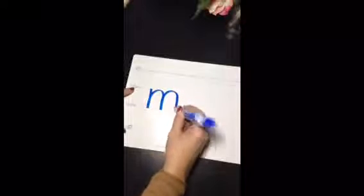M is a consonant. It makes the sound M. M, man, M. M is a plain line letter. We're going to start on the plain line and go down to the grass line, trace back up to the plain line and make a hump, then trace right back up to the plain line again and make another hump.